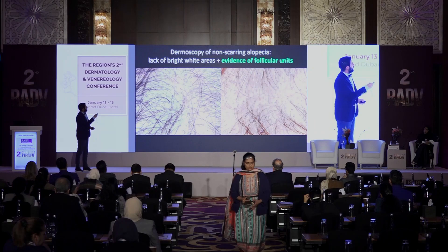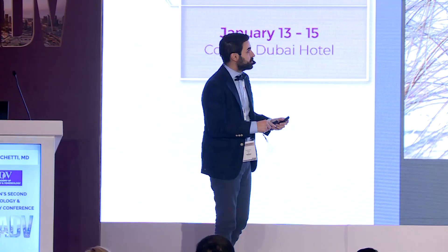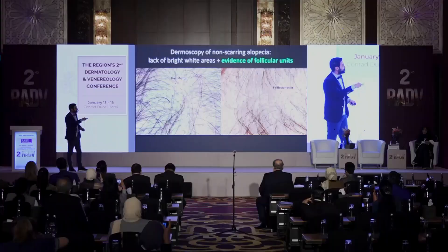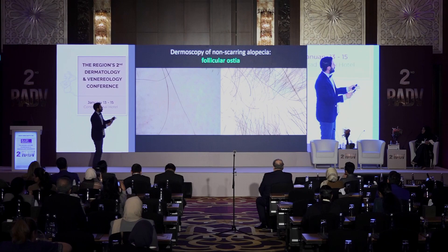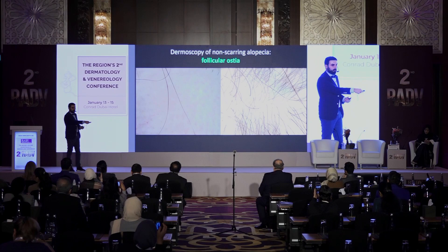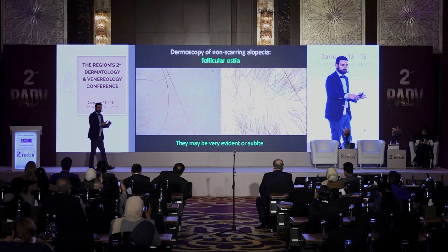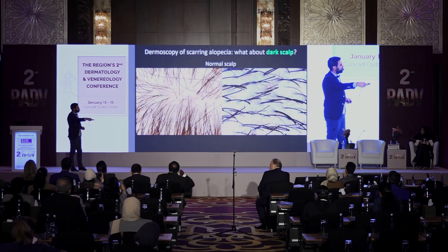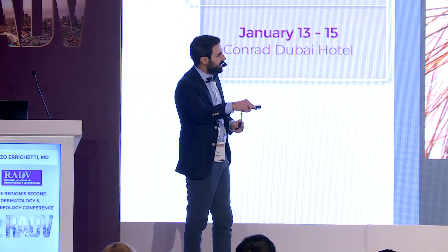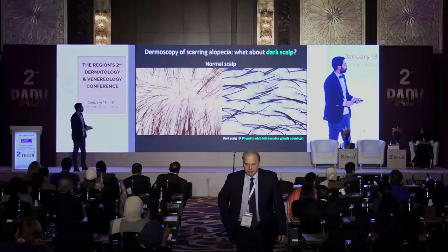The clues of non-scarring alopecia include the lack of bright white areas, but also evidence of follicular units — meaning the presence of hair shafts or follicular ostia, these roundish brown spots. Follicular ostia may be very evident, for example in alopecia areata, but sometimes they are quite subtle and not very easy to see.